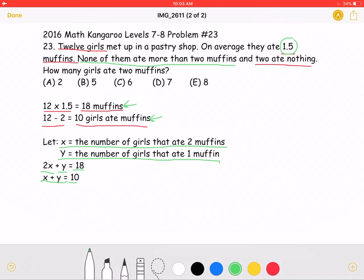So if we subtract these two equations, we would get that x is equal to 8. And x is what we're looking for. We want to know the number of girls that ate two muffins. This means that answer choice E is correct. Eight girls ate two muffins.